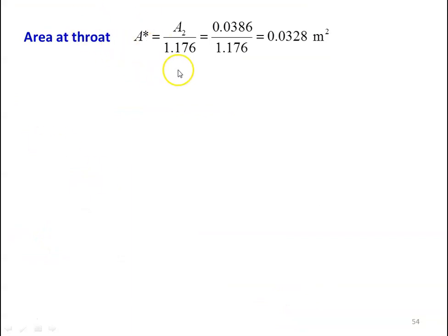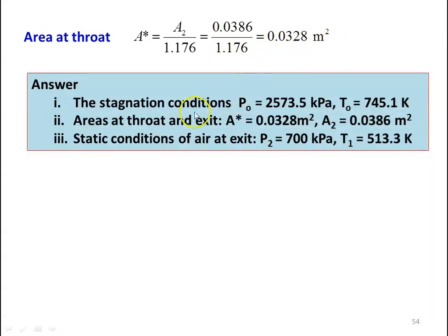Area at the throat section: A* equal to A2 divided by 1.176, which is 0.0386 divided by 1.176, equal to 0.0328 meter square. Answers: stagnation conditions P01 equal to 2573.5 kilo Pascal, T01 equal to 745.1 Kelvin. Areas: A* equal to 0.0328 meter square and A2 equal to 0.0386 meter square. Static conditions at the exit: P2 equal to 700 kilo Pascal and T2 equal to 513.3 Kelvin.